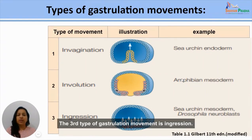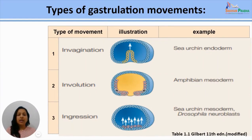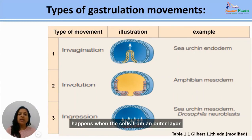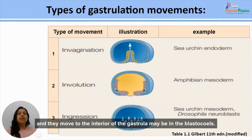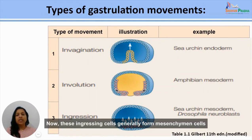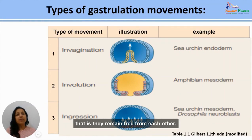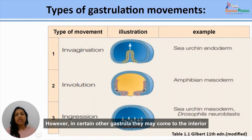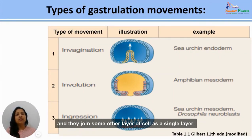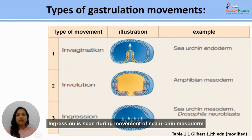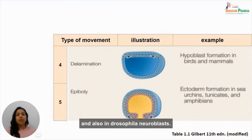The third type is ingression. As seen in the diagram, ingression happens when cells from an outer layer pull themselves off and move to the interior of the gastrula, perhaps into the blastocoel. These ingressing cells generally form mesenchymal cells — that is, they remain free from each other. However, in certain gastrulas they may join another layer of cells as a single layer. Ingression is seen during movement of sea urchin mesoderm and also in Drosophila neuroblasts.